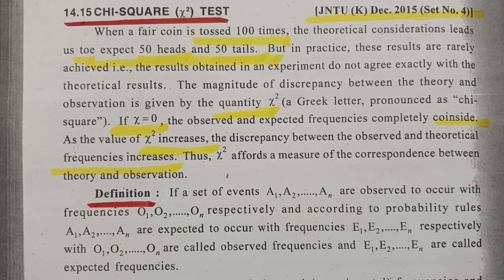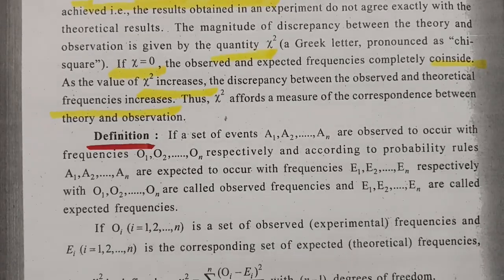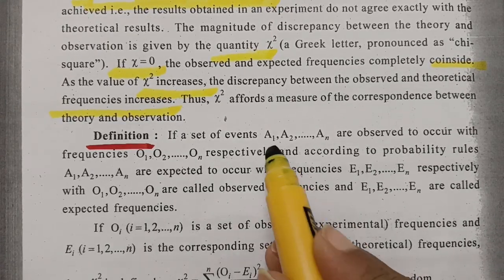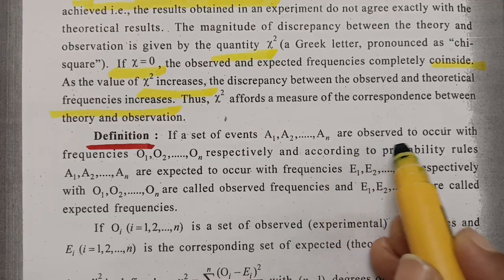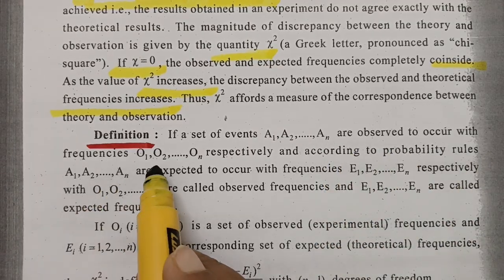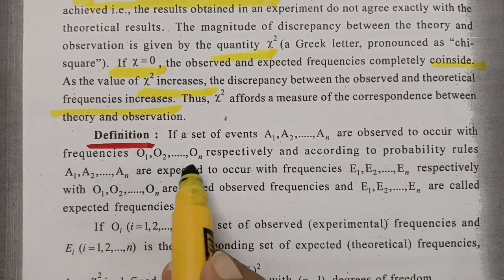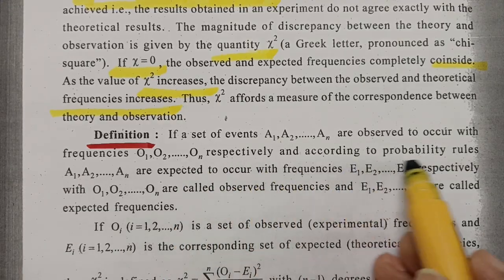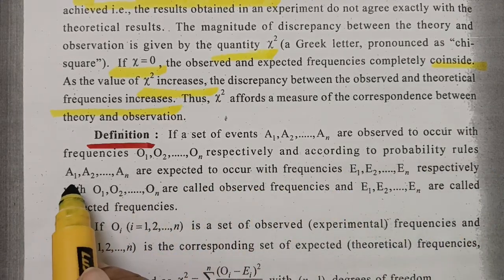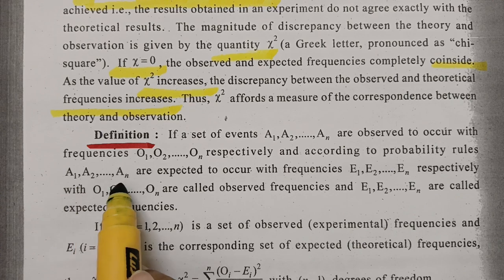This is what chi-square is. If the set of events A1, A2, A3, ..., AN are observed to occur with frequencies O1, O2, O3, ..., ON respectively, and according to probability rules A1, A2, A3, ..., AN are expected to occur with frequencies E1, E2, E3, ..., EN respectively.